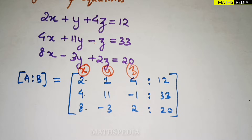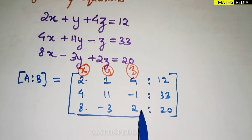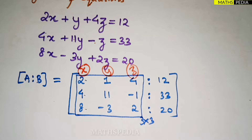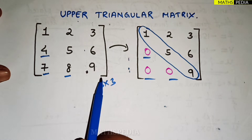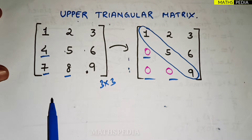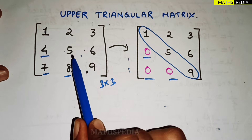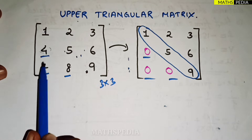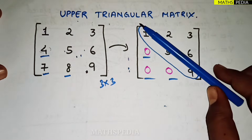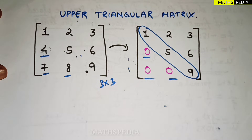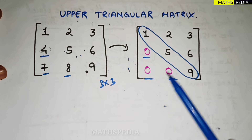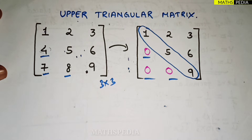Next step: always remember you have to convert only the A matrix — the 3×3 part — into an upper triangular matrix. What is an upper triangular matrix? Consider a 3×3 matrix with diagonal elements. To convert it to upper triangular, you have to change all elements below the diagonal to 0. So below the diagonal, all elements should be 0.